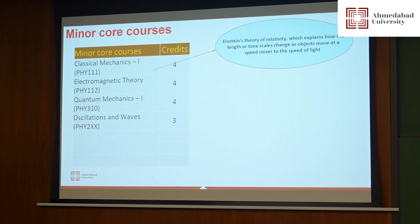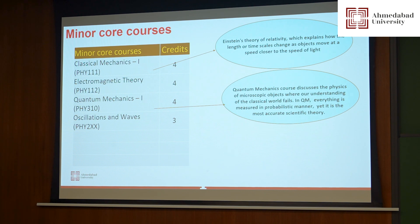For example, in classical mechanics you will learn about Einstein's theory of relativity, which explains how length or time scales change as objects move at speeds closer to the speed of light. Similarly, in quantum mechanics you will learn about the physics of microscopic objects and where our understanding of the classical world fails. In quantum mechanics, everything is measured in a very probabilistic manner, yet it is the most accurate scientific theory.